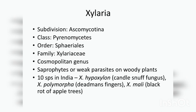The fungi has a somatic phase which is a very well developed and extensively branched mycelium. The hyphae are multicellular and septate. The septa are simple with pores. Cells are uninucleate or multinucleated, and fusion between neighboring hyphae is commonly seen. Motile cells are altogether absent. Asexual reproduction takes place by non-motile spores which are exogenously produced by the formation of conidia.